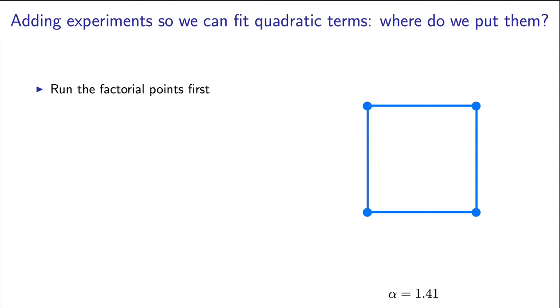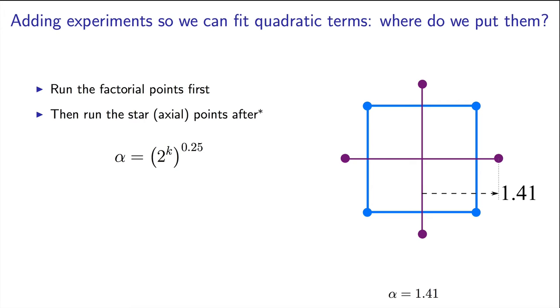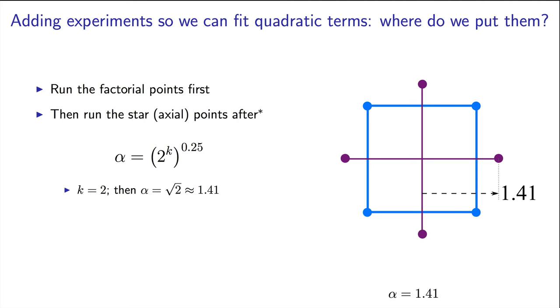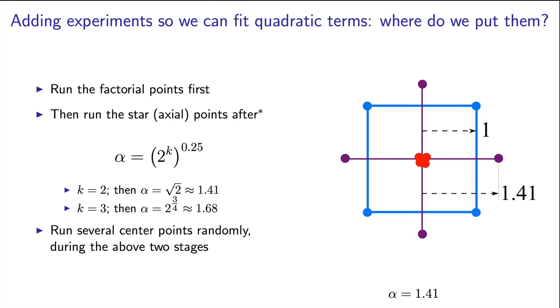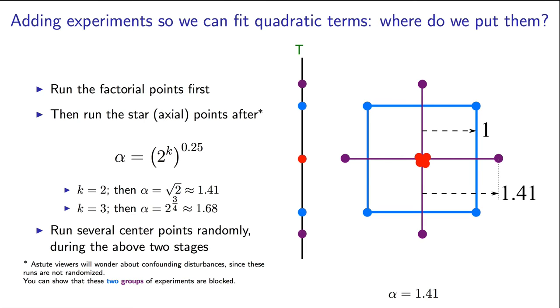Now there are various choices on the distance alpha and the number of centre points to use, but that's a messy discussion that you can research quite easily. The general advice is this though: run the factorials first, then run the star points afterwards at a distance of alpha equal to 2 to the k taken to the power of 1 quarter. So if you have two factors, alpha is equal to 1.41, and if you had three factors you would have alpha equal to 1.68. Also add 3 to 4 centre points to assess lack of fit, and run these centre points at different times, not all after each other. Notice this though: from the individual perspective of factor t and from factor p, each of these have runs at five distinct levels. And that's what helps us go accurately fit that quadratic model.